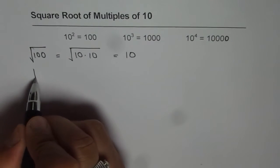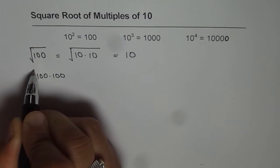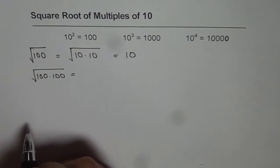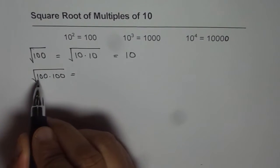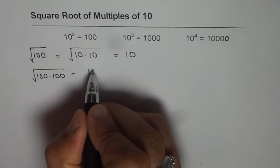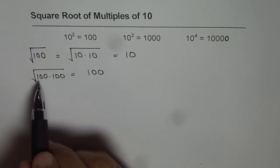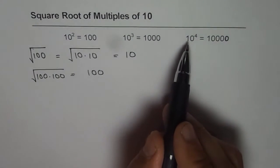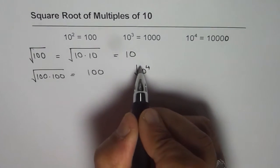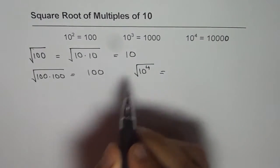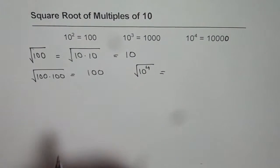Now if I say what is square root of 100 times 100 — 100 times 100 means that the square root should be one of those 100s, so the answer is 100. Now as you can see here, 100 times 100 can be written as 10 to the power of 4. So what is the square root of 10 to the power of 4? It is 100 — the square root is always half the power.